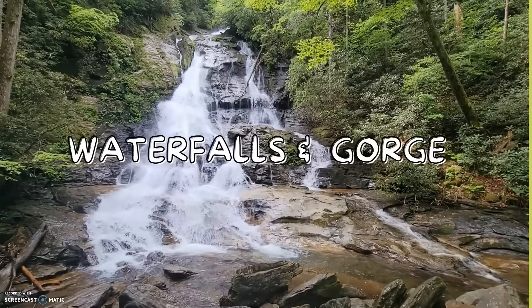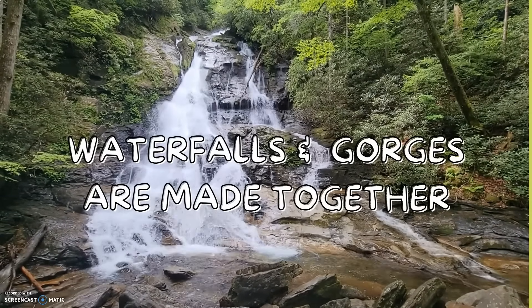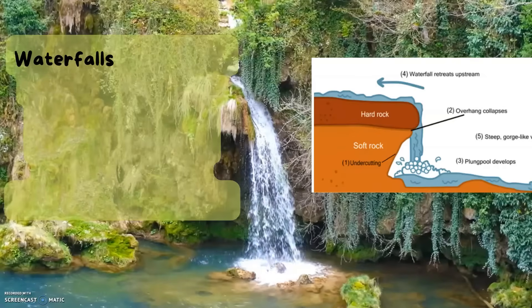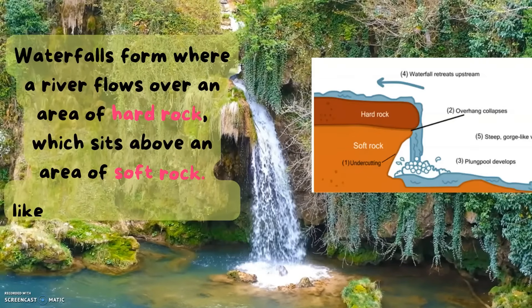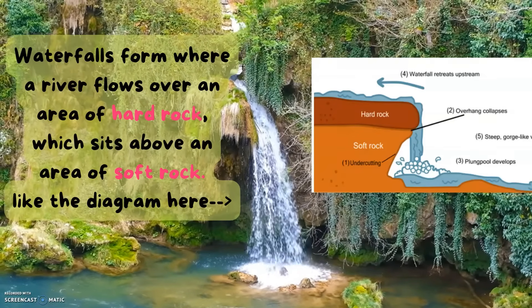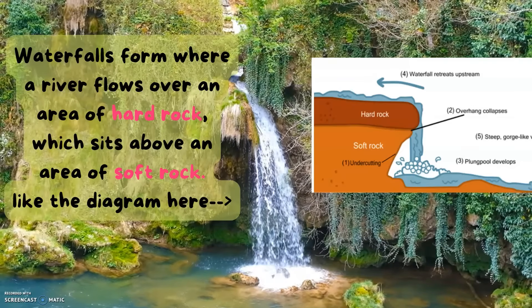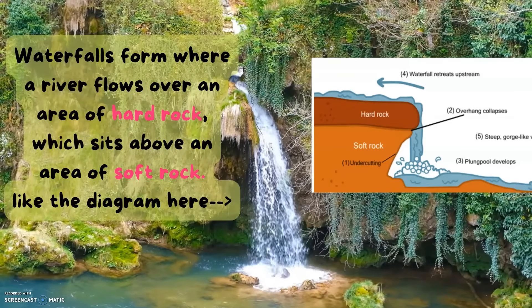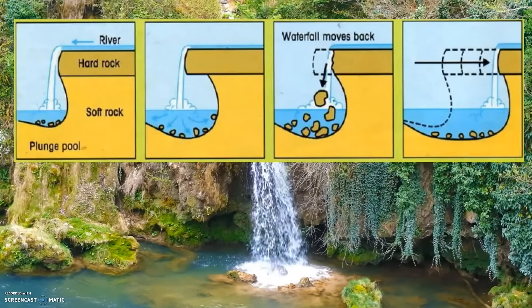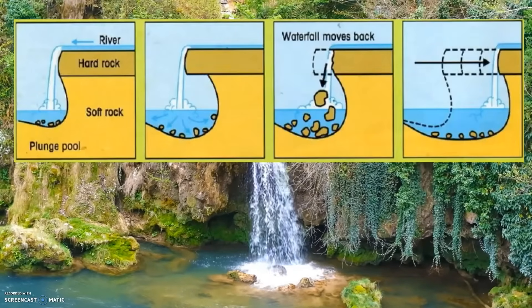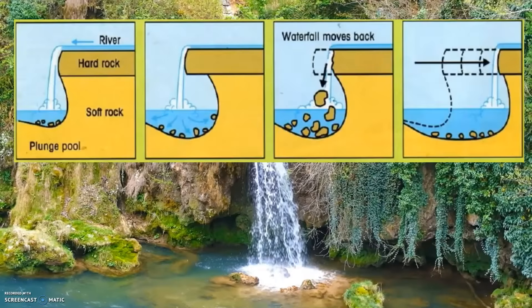Waterfalls and gorges are formed and made together. Waterfalls form where a river flows over an area of hard rock followed by an area of soft rock, like the diagram here. The softer rock is eroded by hydraulic action and abrasion more than the hard rock, creating a step in the river.